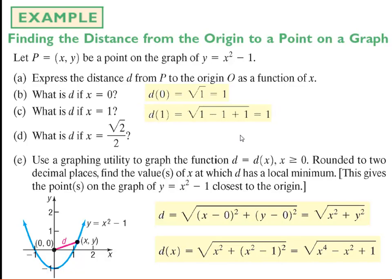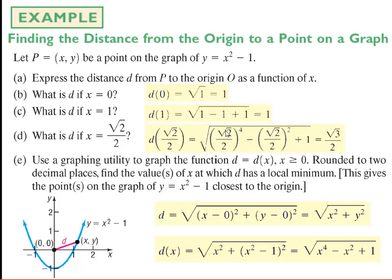If I choose x equals root 2 over 2, I plug that into the equation: I get root 2 over 2 to the fourth, minus root 2 over 2 squared, plus 1. That gives me square root of 3 over 2 as my distance. I could then plug that into my calculator to get a decimal.